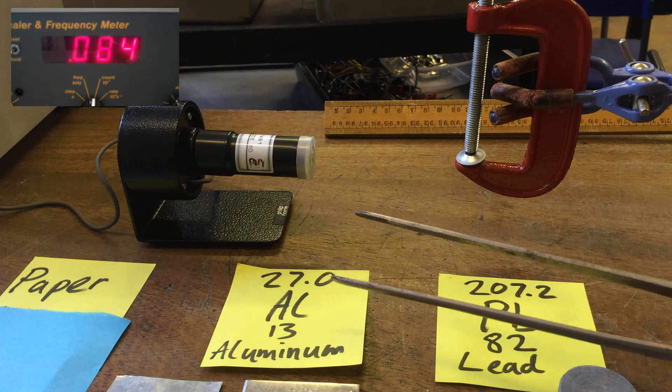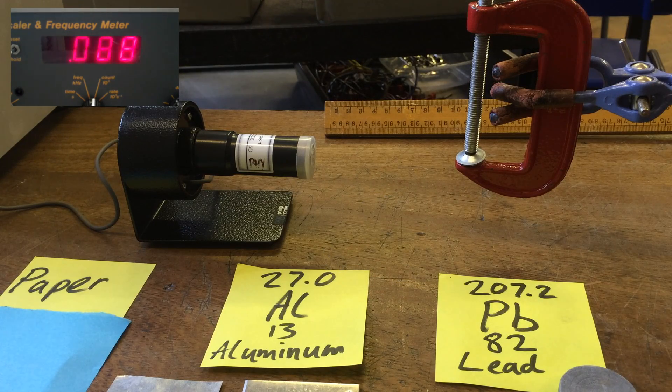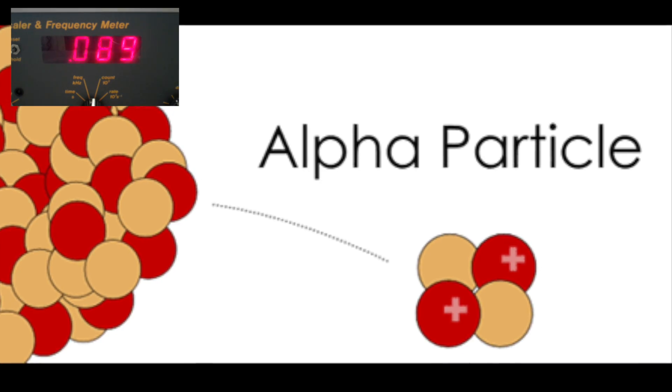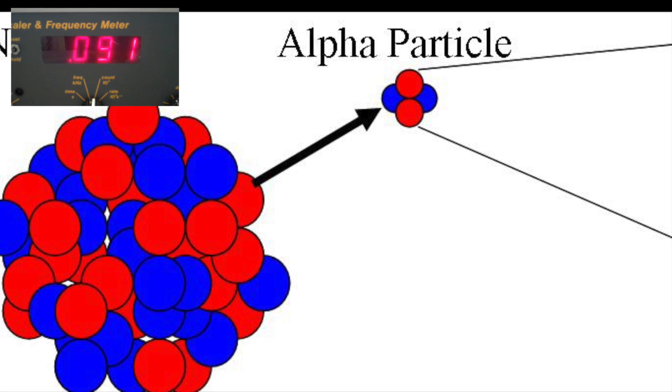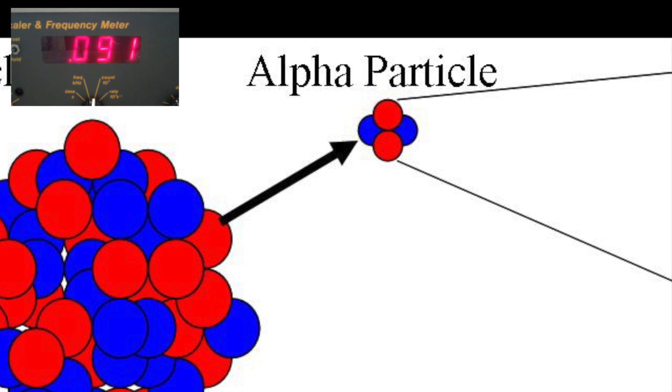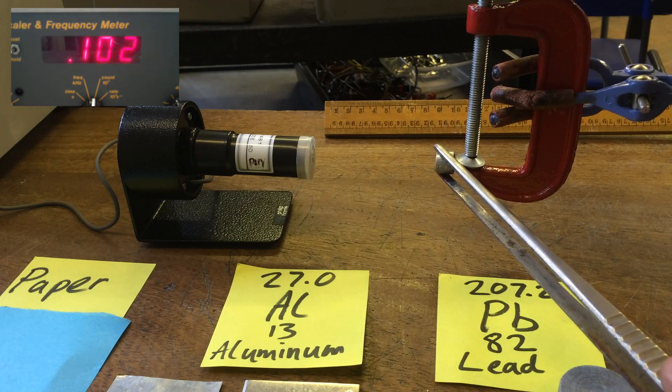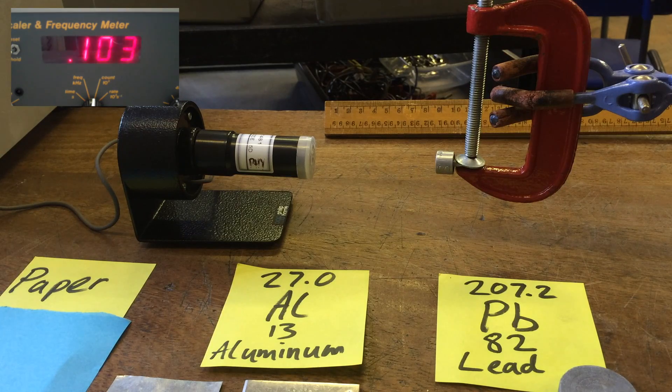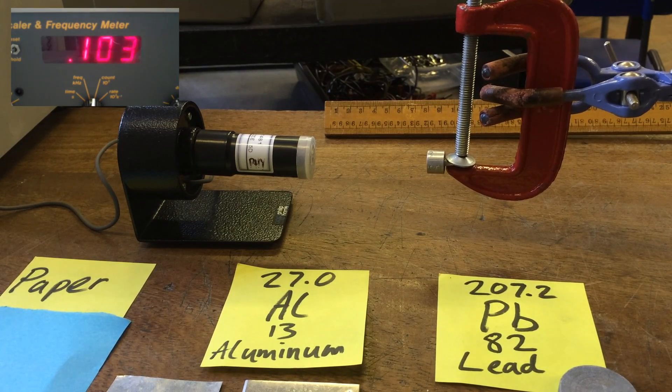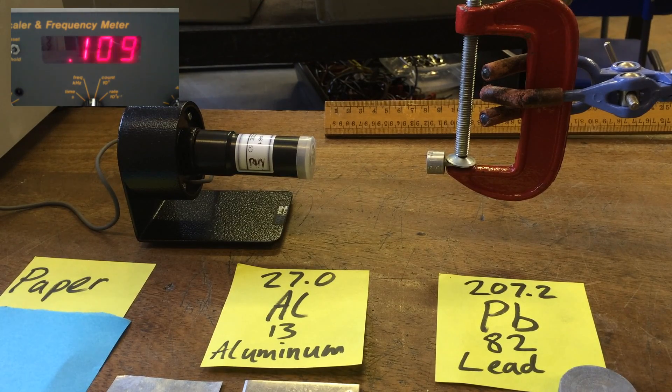The first kind that we're going to look at is the properties of alpha particles. Alpha particles consist of a particle that's made up of two protons and two neutrons. What I'm just clamping down here is a small cylinder that's emitting alpha particles.